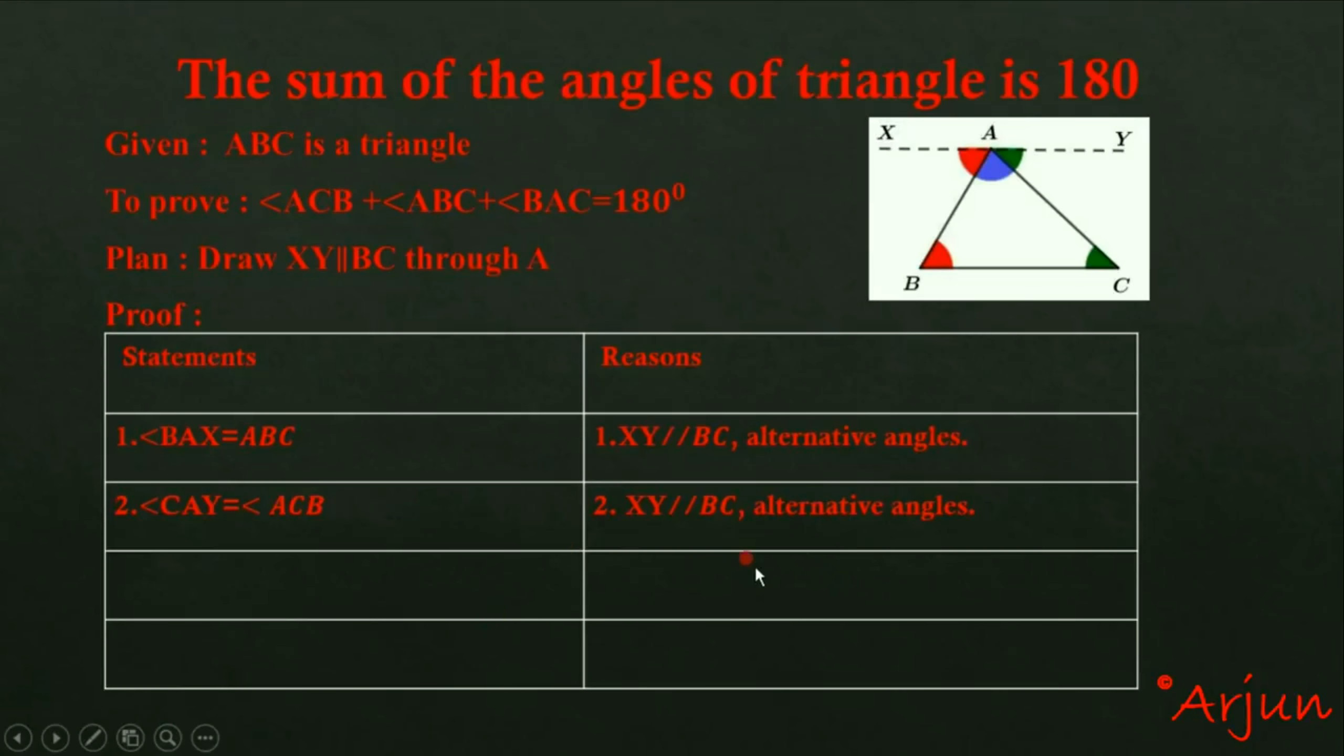Statement number three: angle BAX plus angle BAC plus angle CAY equals 180 degrees. On line XY, we have angle BAX, then angle BAC, plus angle CAY. These angles form a straight line at point A.